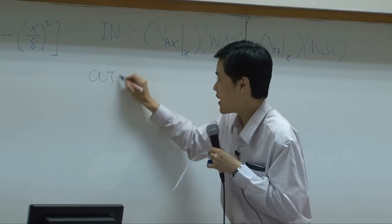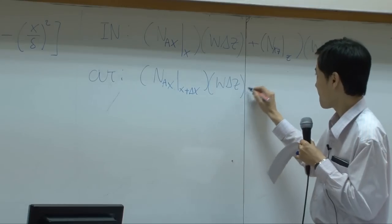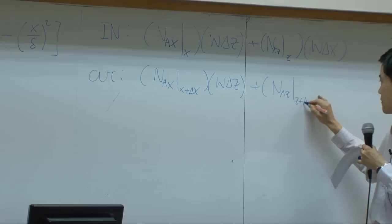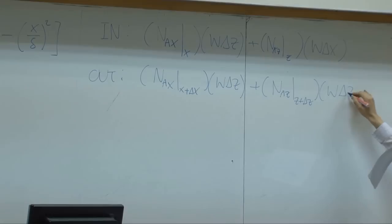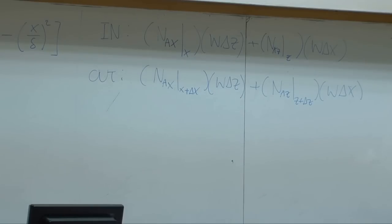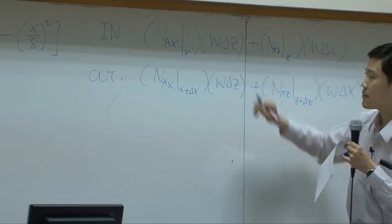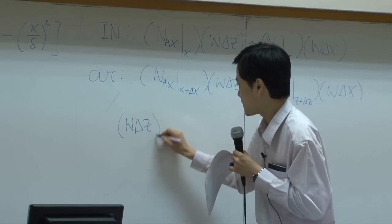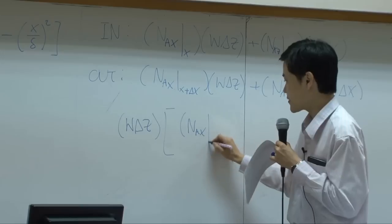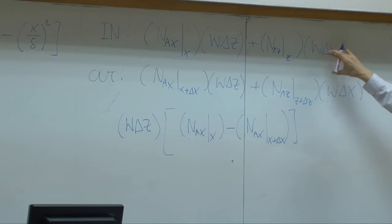That's the input term. The output term should look similar. Let's keep our example here to have no reaction. If there's no reaction you have only in minus out equal to zero. So these two combine. You will have w·Δz times (NAx at x minus NAx at x plus Δx), and then these two terms combine.